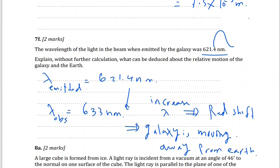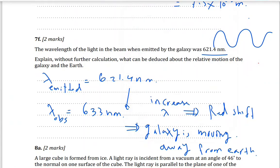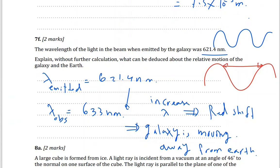Always remember: lambda of red is greater than lambda of blue. So if the observed wavelength increases (shifts toward red), that indicates a red shift, meaning the galaxy is moving away from us.